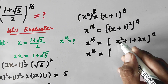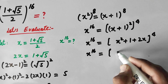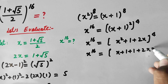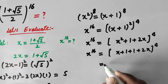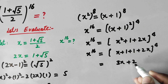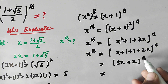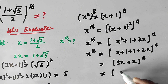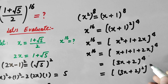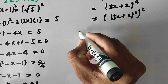Now we replace the value of x squared — since x squared equals x plus 1 — so x squared plus 1 becomes x plus 1 plus 1, giving (x plus 2 plus 2x) to the power 4, which implies (3x plus 2) to the power 4.